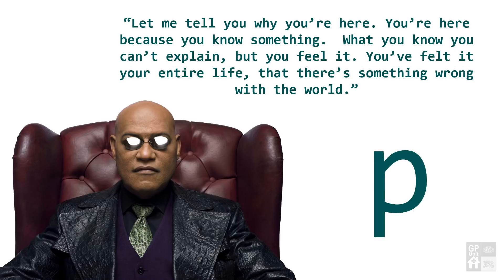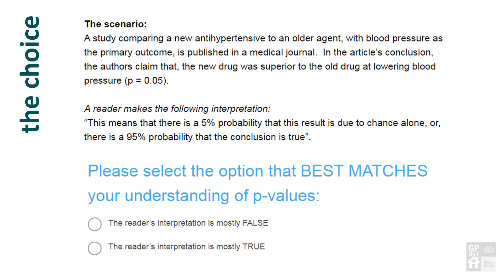What is P? It begins with choice. The following scenario is faced by users of science and research everywhere — doctors, nurses, policy makers. A study is published in a journal, this example on a new blood pressure pill. In the article's conclusion, the authors claimed the new drug was superior to the old drug at lowering blood pressure. P equals 0.05. A reader, perhaps a doctor deciding what to prescribe their patient, thinks this means there is a 5% probability the result is due to chance alone, or a 95% probability the conclusion is true. Is this reader correct?